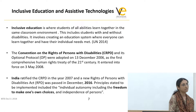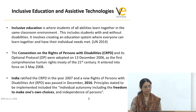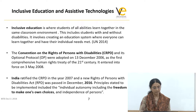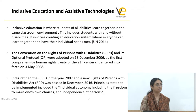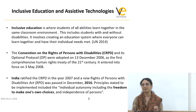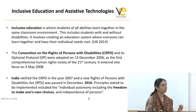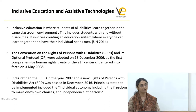Despite all this, it was only in 2016 that India actually implemented the new Rights for Persons with Disabilities Act. A very interesting statement in that bill says it provides individual autonomy including the freedom to make one's own choices. Legally, every disabled person in this country is entitled to the freedom to choose what they want to study, how they want to move around, where they want to live, and what job they want to do.